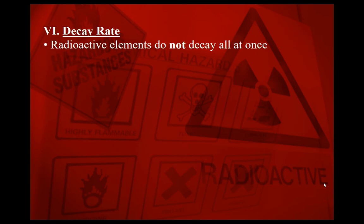In the previous lesson, we talked about three different types of radioactive decay. We had alpha decay, where a parent isotope emitted an alpha particle. We had beta decay — beta plus or beta minus — where beta negative decay emitted an electron and beta positive decay emitted a positron. We also talked about gamma: the emission of a gamma ray photon when you go from an excited nucleus to one that is unexcited.